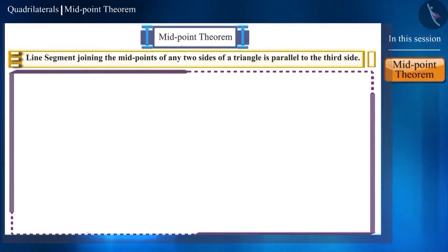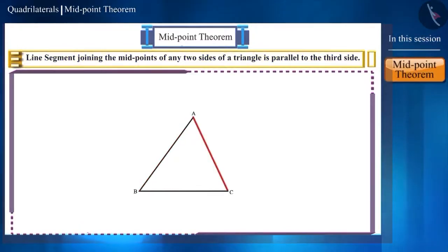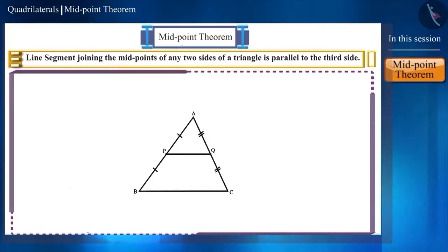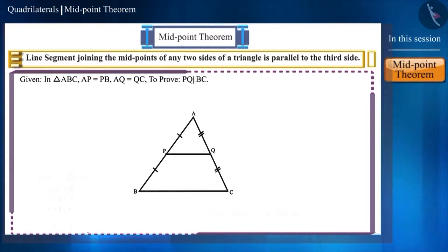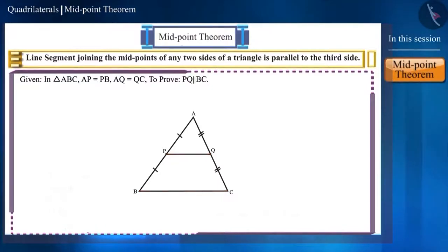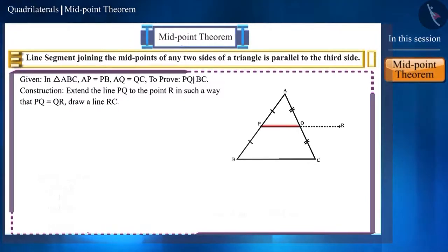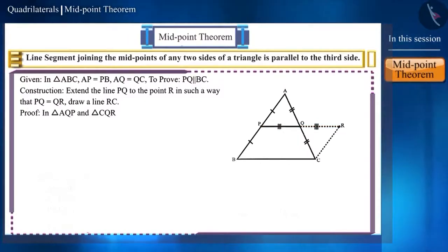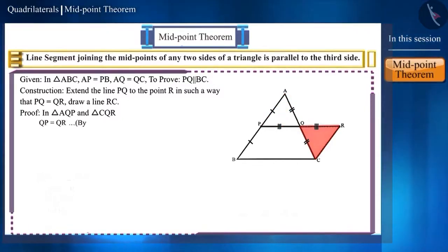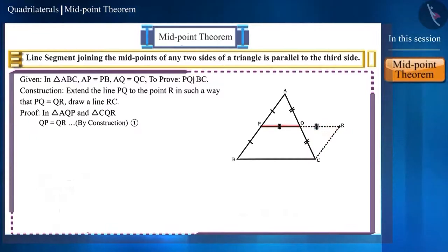We draw a figure with the help of the statement. In triangle ABC, the midpoints of the sides AB and AC are P and Q respectively. This is given to us. And we have to prove that the line segment PQ is parallel to the side BC. For the construction, extend the line PQ to the point R such that PQ equals QR, and join R and C. Here, we get two triangles: triangle AQP and triangle CQR. In this, the side PQ is equal to the side QR.